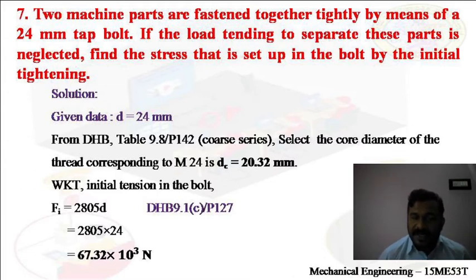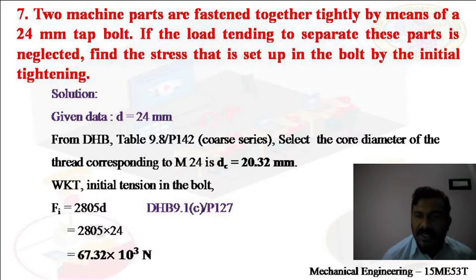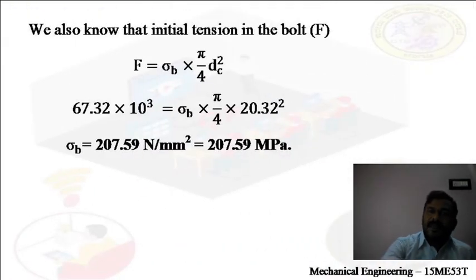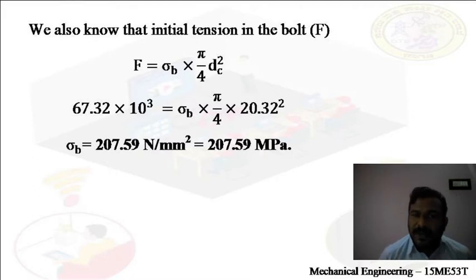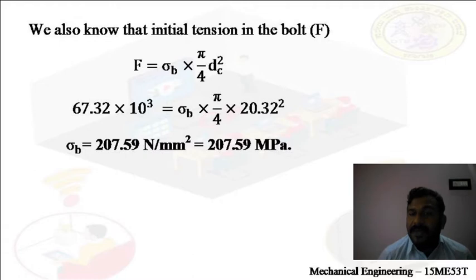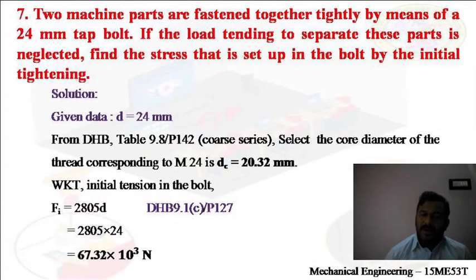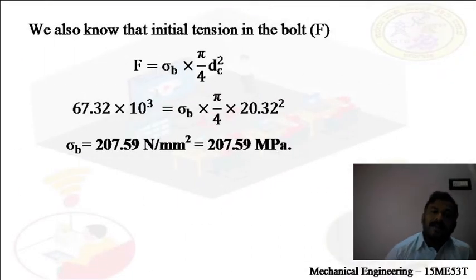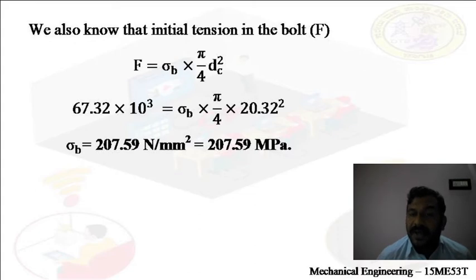Stress = Fi / (π/4 × dc²) = 67.32 × 10³ / (π/4 × 20.32²) = 207.59 N/mm² = 207.59 MPa. This means while tightening the tap bolt with the spanner, the stress induced in the bolt is 207.59 MPa. This is due to the initial tightening load, not the external load.